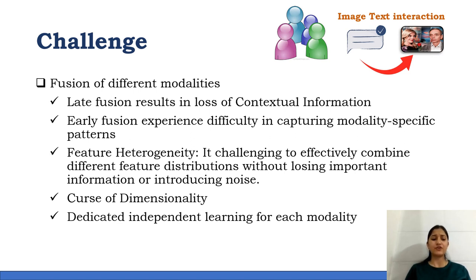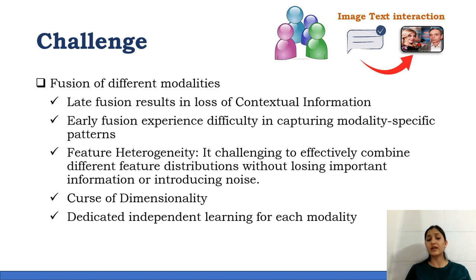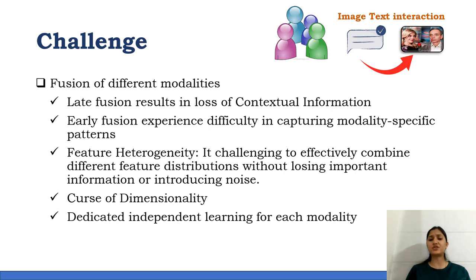To learn two-modality fusion, various approaches have been utilized, and there are two types of fusions used in state-of-the-art methods. Late fusion results in loss of contextual information, whereas early fusion results in difficulty in capturing modality-specific patterns. It also results in the curse of dimensionality. When handling two different modalities together, you need dedicated independent learning for each modality, which causes additional computation demands. We can conclude that it is always challenging to effectively combine different feature distributions without losing important information or introducing noise.